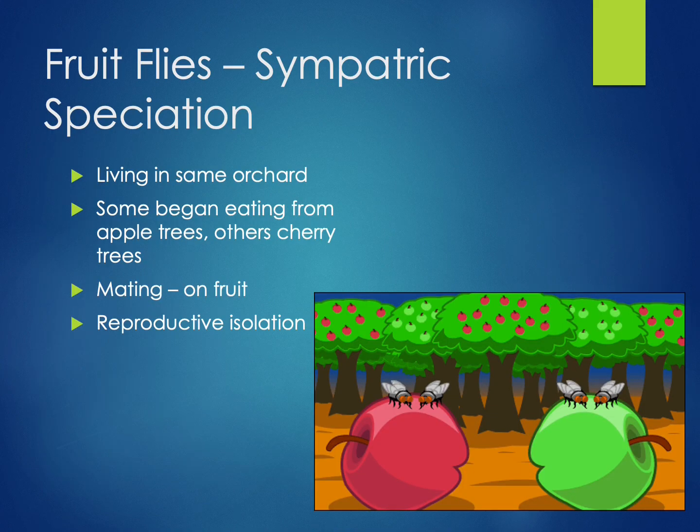Here's another example of sympatric speciation. Imagine two fruit flies living in the same orchard. Over time, some begin eating from apple trees while others eat from cherry trees. As they spend time on separate types of trees, they start mating there, and over time this leads to reproductive isolation. They are in the same habitat, yet they evolve into separate species.